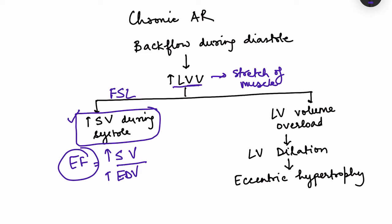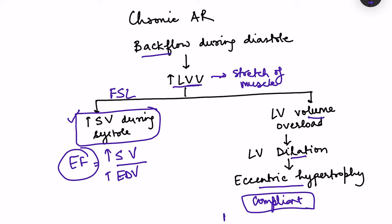In slow chronic AR, the increase in left ventricular volume triggers compensatory changes — left ventricular dilation and eccentric hypertrophy. This eccentric hypertrophy makes the left ventricle more compliant, allowing it to accommodate increased blood volume without a marked rise in LVEDP. Because of increased compliance there is no diastolic dysfunction, and LVEDP does not increase significantly.